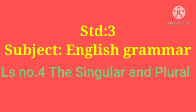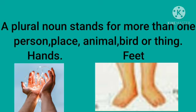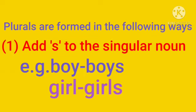Standard Third Subject English Grammar Lesson No. 4: The Singular and Plural. A singular noun stands for one person, place, animal, bird, or thing. Example: Mouth, Face. A plural noun stands for more than one person, place, animal, bird, or thing. Example: Hands, Feet. Plurals are formed in the following ways.